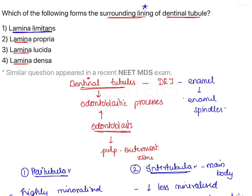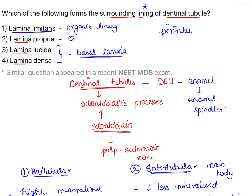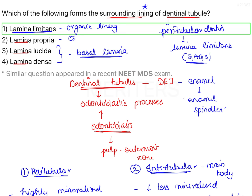Getting back to the question: lamina limitans denotes the thin organic lining of peritubular dentin; lamina propria denotes the connective tissue; lamina lucida and lamina densa are both layers of the basal lamina, the ultrastructural term for basement membrane. Our question asks about the surrounding lining of dentinal tubules. Dentinal tubules are immediately surrounded by peritubular dentin, which consists of a thin organic lining known as lamina limitans — which is also rich in glycosaminoglycans. Therefore, the correct answer is option one: lamina limitans.